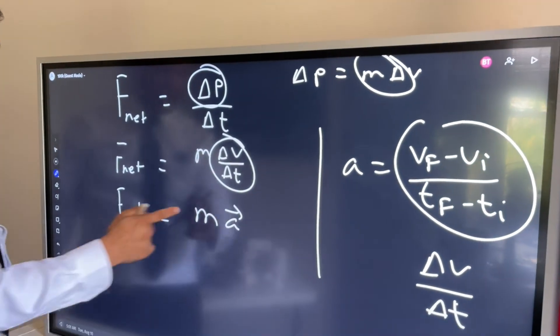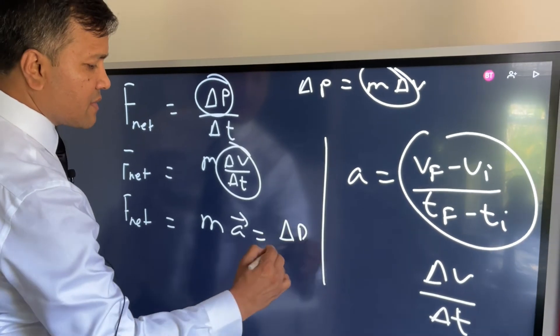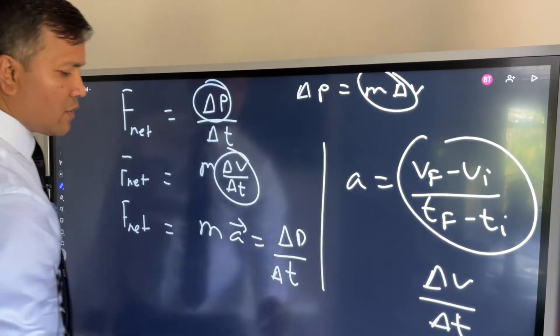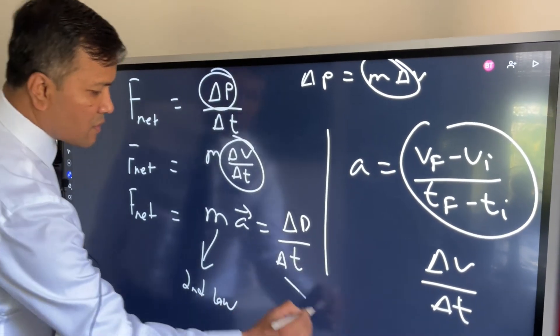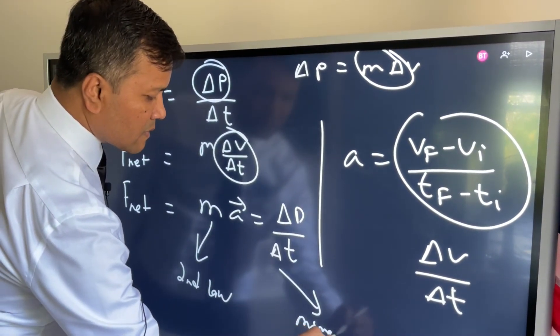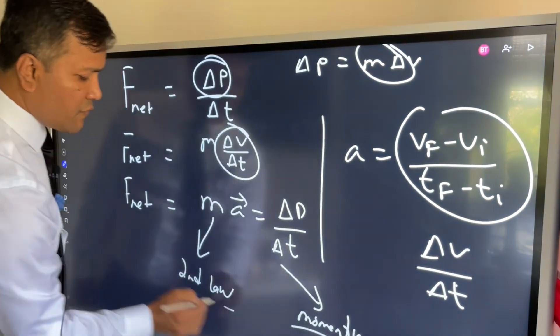So then this can be written as Δp/Δt. So what does that mean? That means Newton's second law is equal to momentum. This is the proof.